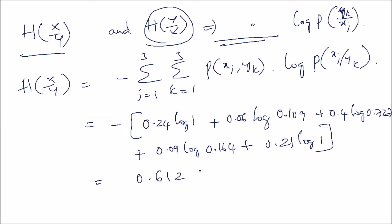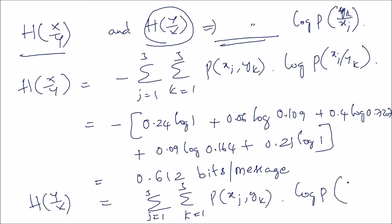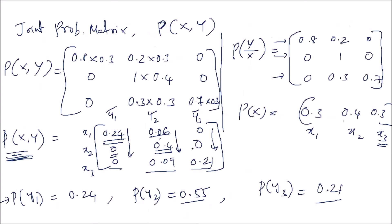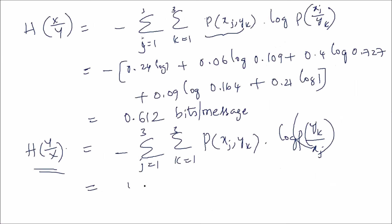For conditional entropy H(Y|X): H(Y|X) = -double summation of P(xj,yk) log P(yk|xj). We multiply each non-zero element of P(XY) by the log of the corresponding P(Y|X) value: 0.24 log 0.8 + 0.06 log 0.2 + 0.4 log 1 + 0.09 log 0.3 + 0.21 log 0.7. This gives H(Y|X) = 0.482 bits per message.